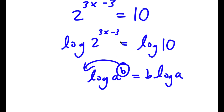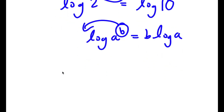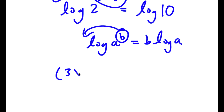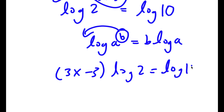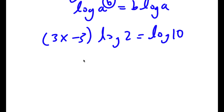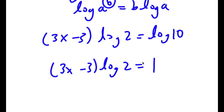So in this case b is 3x minus 3, and if I move this to the front I get 3x minus 3 times log 2 is equal to log 10. Now log 10 is actually equal to 1.